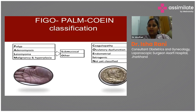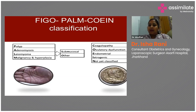C stands for coagulopathy, O for ovulatory dysfunction, E for endometrial causes, I for iatrogenic, and N for not yet classified. The previously used term dysfunctional uterine bleeding, when the cause was not assigned, is now referred to as AUB-N.